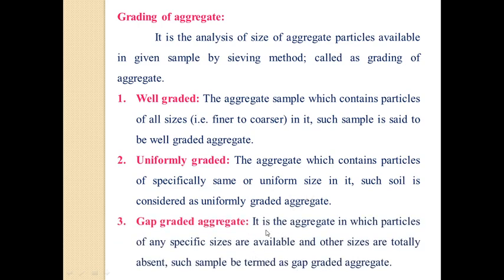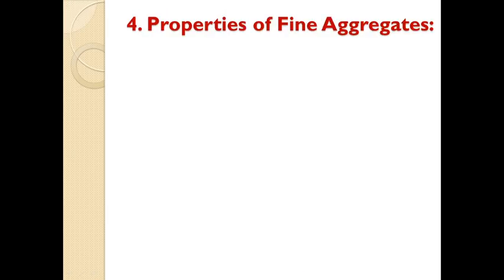Gap graded aggregate is aggregate in which particles of any specific size are present but other sizes are totally absent. If a particular sieve size is not represented in the aggregate, it is called gap graded aggregate. Gap graded aggregate creates deficiency in cohesiveness and permeability of the surface finish, so for good concreting work we prefer well graded aggregate and avoid uniformly graded or gap graded aggregate.